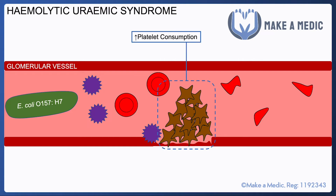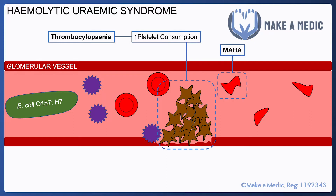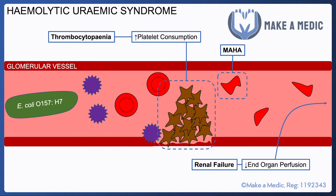To go through that one by one: there's platelet consumption, which is why we get thrombocytopenia; there is microangiopathic haemolytic anaemia because red cells are being broken down within small vessels; and finally, given that red cells are unable to get through this narrowing in a complete form and provide decent perfusion to the end organs, it results in renal failure, because the glomerular vessels are unable to pass healthy red blood cells through to perfuse the kidney.